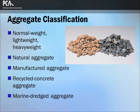Aggregates are classified into three categories: normal weight, light weight, shown in the picture on the right, and heavy weight. The approximate bulk density of aggregates commonly used in normal weight concrete ranges from about 75 to 110 pounds per cubic foot, while lightweight concrete aggregates range from 35 to 70 pounds per cubic foot, and heavy weight aggregates are typically over 2,100 kilograms or 130 pounds per cubic foot. This discussion focuses on normal weight aggregates. Light weight and heavy weight aggregates are discussed in the module on special types of concrete.